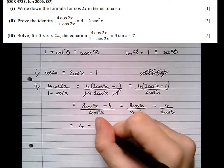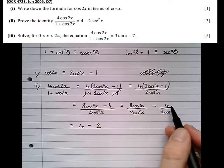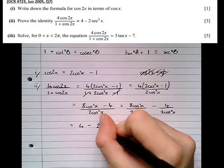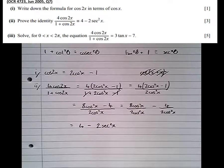Minus, well, 4 divided by 2 is 2, and over cos squared x, the reciprocal of cos squared x is sec squared x. So we've actually proved now what it asked us to prove.